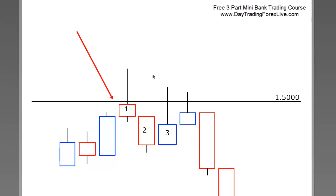The stop run candle, as the name implies, went above the area we were looking for, took the stops, and was rejected back down below it. We do not take the entry after the first candle closes. What we do is wait for the second candle to open — the second candle is what we term the confirming candle. The confirming candle has two rules, looking at it from the example of a short setup. Rule number one: it needs to close below the body of the reversal candle — candle number two needs to close below the body of candle number one.